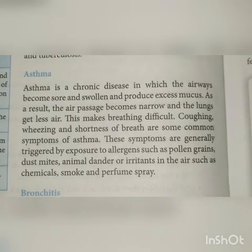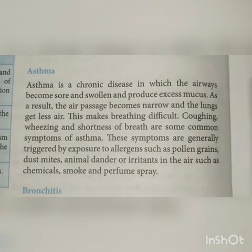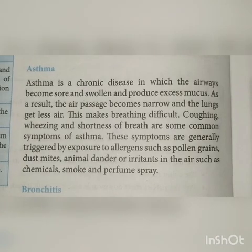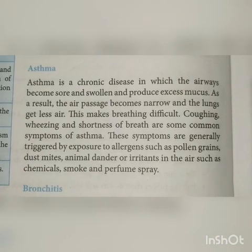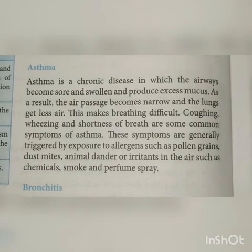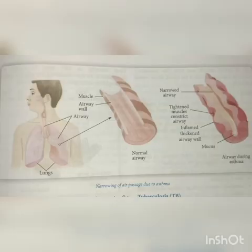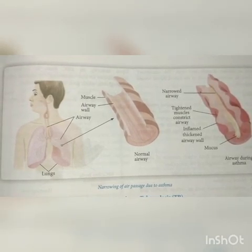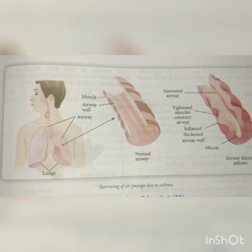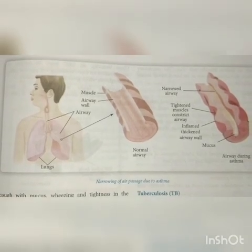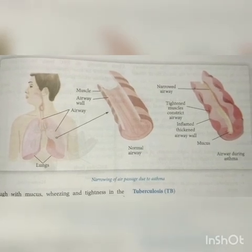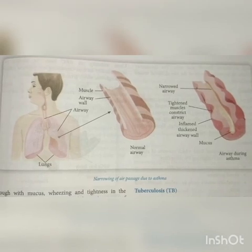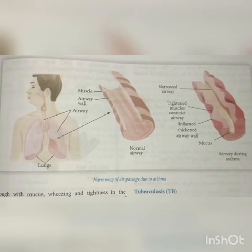These symptoms are generally triggered by exposure to allergens such as pollen grains, dust mites, animal dander, or irritants in the air such as chemicals, smoke, and perfume spray. Looking at this diagram, narrowing of the air passage due to asthma: if the airway is normal there is no swelling on the muscles and no mucus, but if the person is suffering from asthma then a narrowed airway is formed and mucus accumulates in the airway passage.